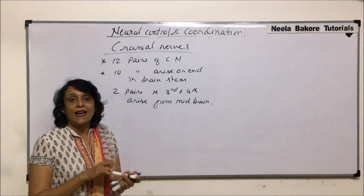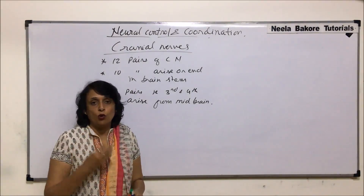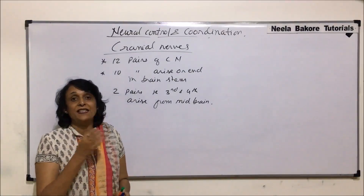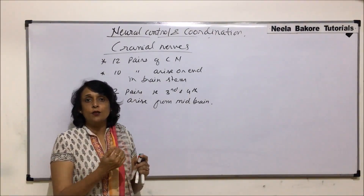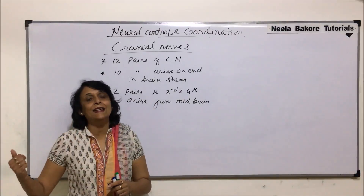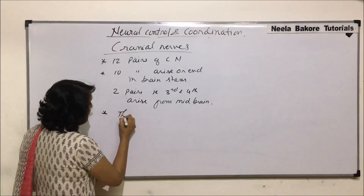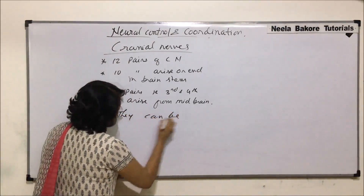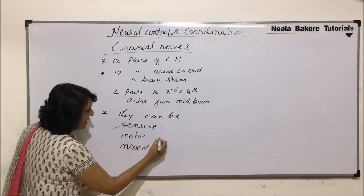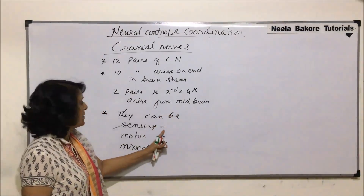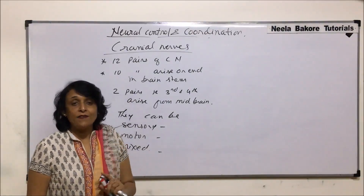We talk of 'arising from' and 'ending in' because cranial nerves can either be sensory, motor, or mixed. If it is a sensory nerve it originates from the sense organ and ends in the brain. If it is a motor nerve it originates from the brain stem. After writing their names we will note which ones are sensory, which are motor, and which are mixed.